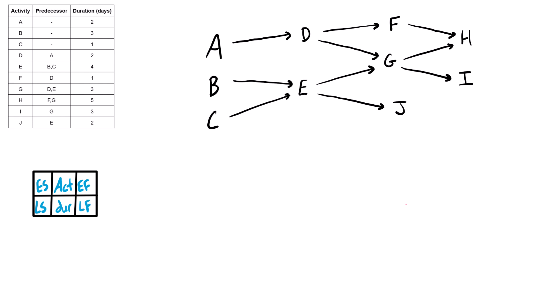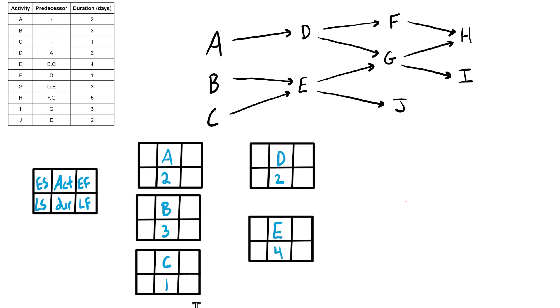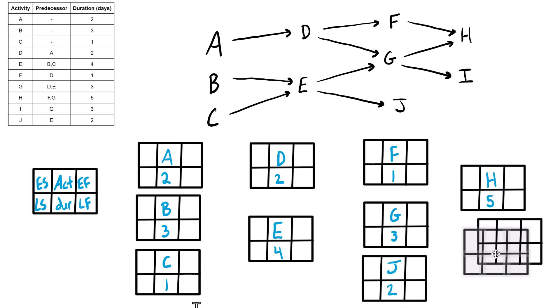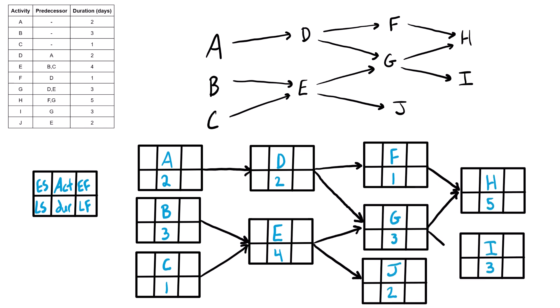Now we can redraw the network diagram in its final version using these squares as nodes and start filling out the early starts of each initial activity. For A, B, and C, the early starts are all zero — they're starting at the very beginning of the project. Adding the duration gives the early finish: zero plus two is two for A, zero plus three is three for B, and zero plus one is one for C.